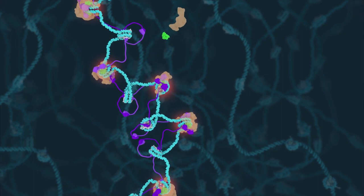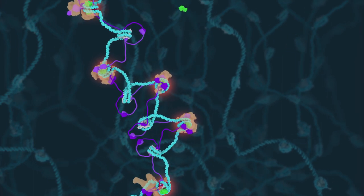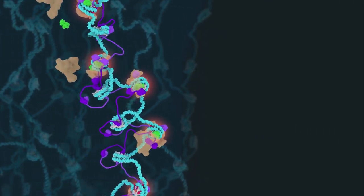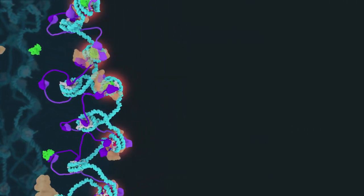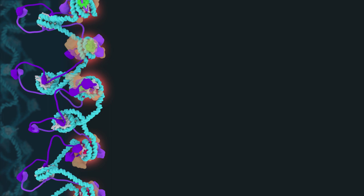As chromosomes condense to their mitotic form, related global and local centromere asymmetries are generated. A global asymmetry is formed where CENP-A nucleosomes preferentially reside on the surface of the mitotic chromosome. Thus, one side of the centromere faces condensed chromatin while the other faces the cell cytoplasm.